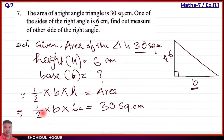So, one half into six gives us three. We now have 3 times the unknown height equal to 30 square centimeters.